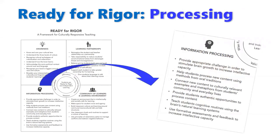The last area in this overview is information processing. The first thing to spotlight is providing an appropriate challenge to stimulate brain growth. There is a lot of research, which Zaretta Hammond cites in her book, about how you can grow a brain's capacity to learn. One of the ways is through productive struggle — challenging assignments that are within the student's reach but push them a little to get there. That is a really excellent brain workout, similar to a body workout. We don't expect someone to run a marathon their first time out, but we may have them push themselves to run a little further each time. Providing challenges is really important to stimulate brain growth.